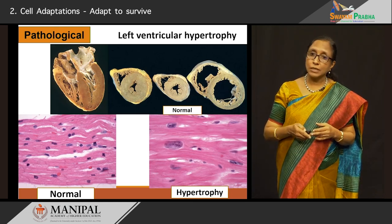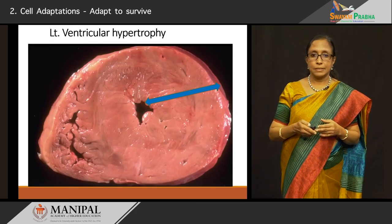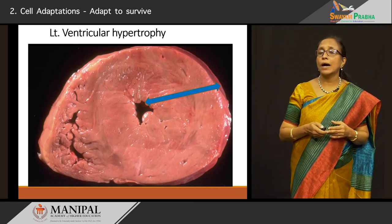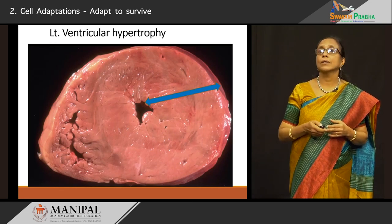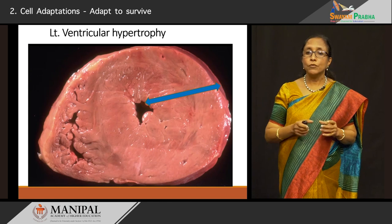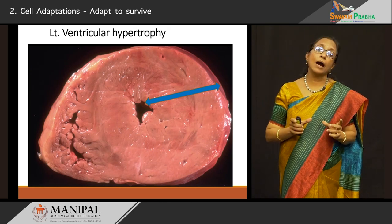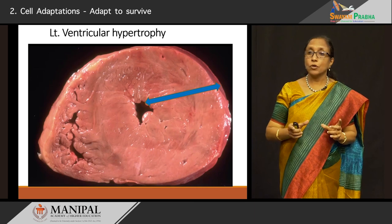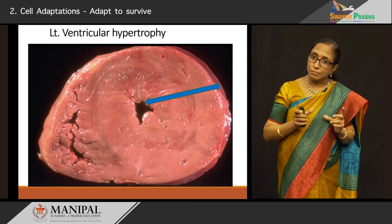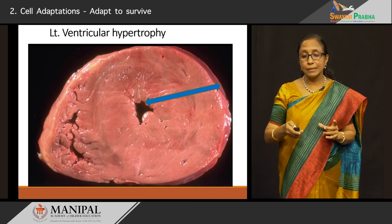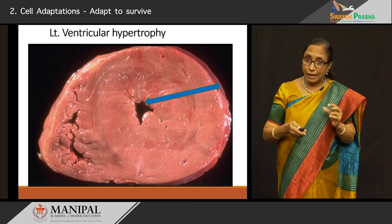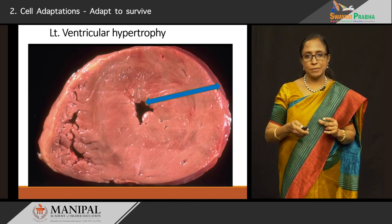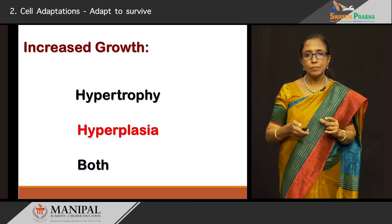In all these cases, microscopy will show each cardiac muscle fiber which is hypertrophied — big in size — with the cytoplasm and nucleus both enlarged. Right ventricular hypertrophy can be seen in conditions where there is a right ventricular outflow obstruction, like pulmonary hypertension or pulmonary stenosis. These are pathological causes of hypertrophy.